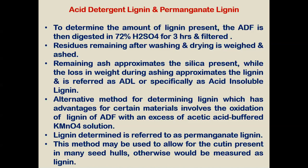An alternative method for determining lignin involves the oxidation of the ADL residue with excess potassium permanganate (KMnO₄) solution. The lignin determined by this method is referred to as permanganate lignin. This method may be used to allow for cutins present in many seed hulls, which would otherwise be measured as lignin; due to the presence of cutin, the permanganate lignin method is preferred for estimation of lignin concentration.